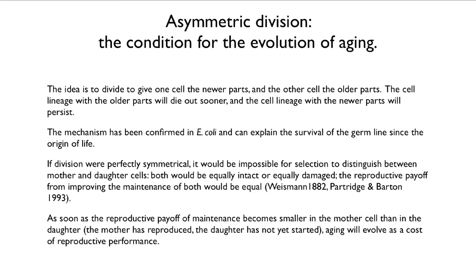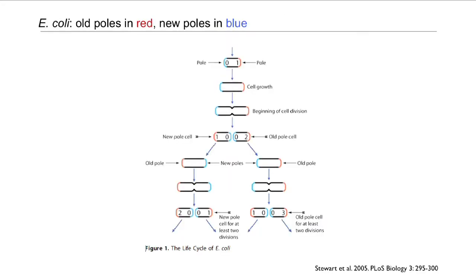However, as soon as the reproductive payoff of maintaining the mother's cell becomes smaller — the mother has reproduced, the daughter has not yet started, the mother is more likely to die, the daughter has younger parts and is in better shape, and is therefore more likely to survive and reproduce — then aging will evolve in the mother cell as a cost of that reproductive performance. This is illustrated by a diagram of E. coli division where the old poles of the cell are in red and the new poles are in blue. The point is to show that you can trace through the process of division which cell got the new pole and which got the old pole.